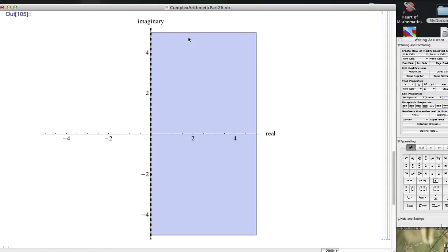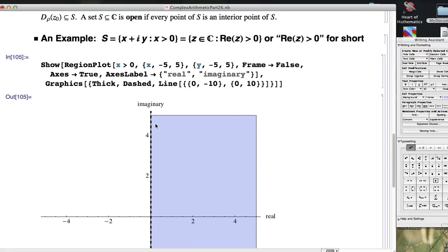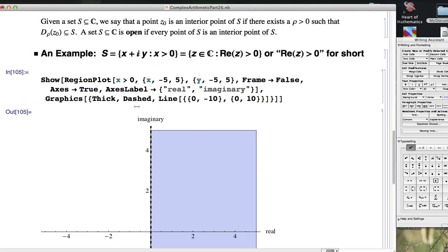This part does go up forever, even though it looks like it's cut off, and this part does go down forever, even though it looks like it's cut off, and, of course, to the right forever. This is an open set. Every point of it is an interior point. No matter how close you are to the boundary, you'll be able to find some small radius ρ that keeps your set, keeps your open disk of radius ρ inside that boundary. For example,